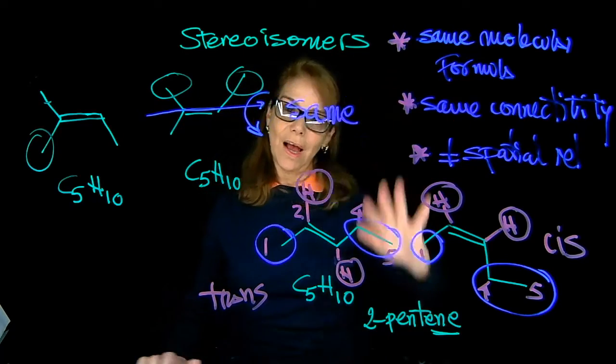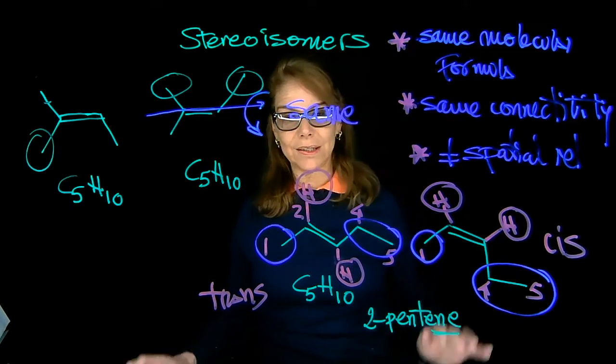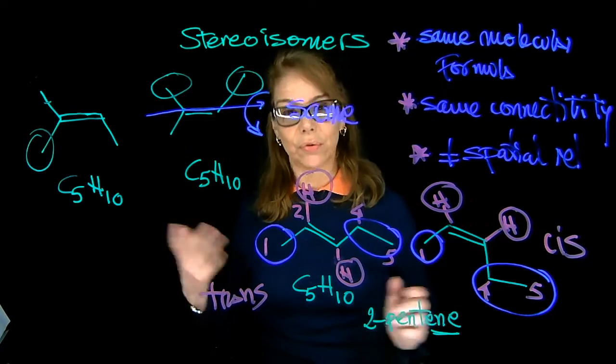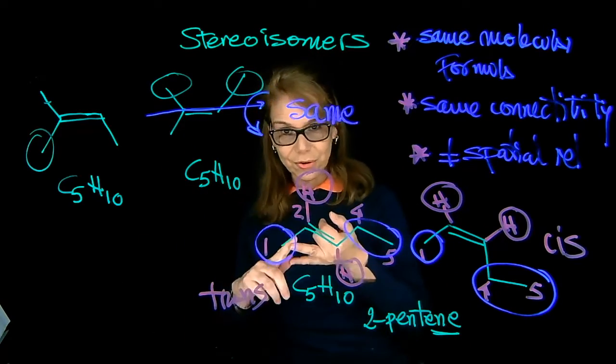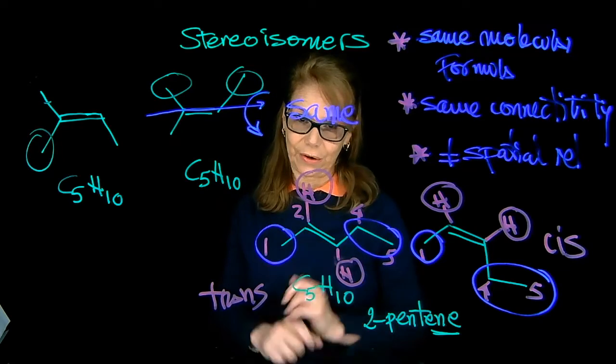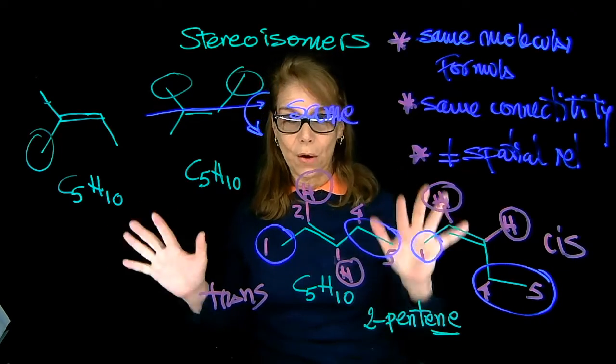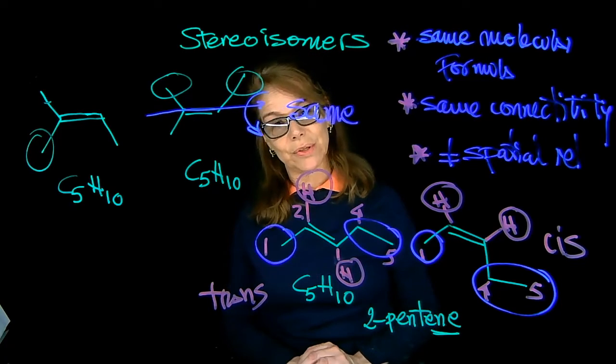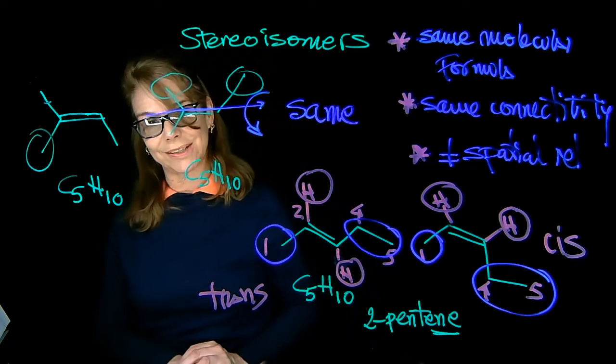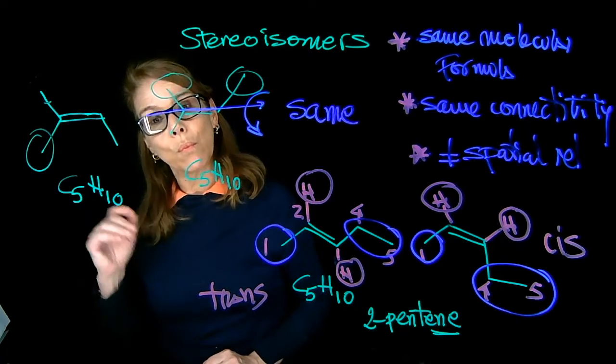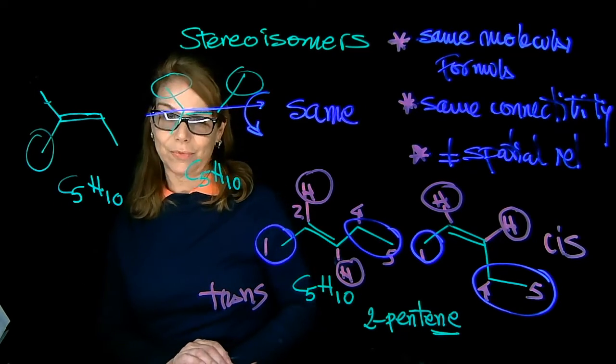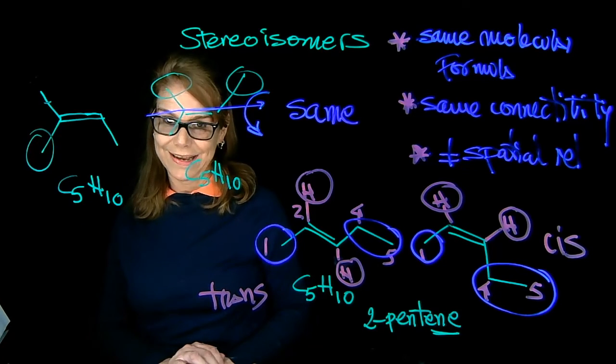Okay. So, that's how you would analyze when you are comparing two molecules, and you're trying to decide whether they are the same molecule, constitutional isomers, or stereoisomers. And in the case, what we have studied so far, is stereoisomers of the type cis-trans. We're going to next study more types of stereoisomers, a different type, other than cis-trans.